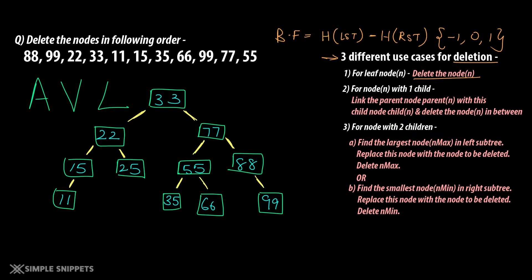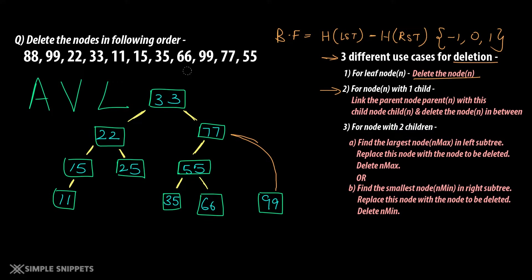The second use case is for a node with one child. Let's say you want to delete 88 — it has only one child. What we do is link 88's child, which is 99, with 88's parent, and then erase 88. The link is still maintained. But again, when you delete a node, you'll have to calculate the balance factor for all the different nodes. That is mandatory for every step — regardless of whether it is a leaf node, a node with one child, or a node with two children.